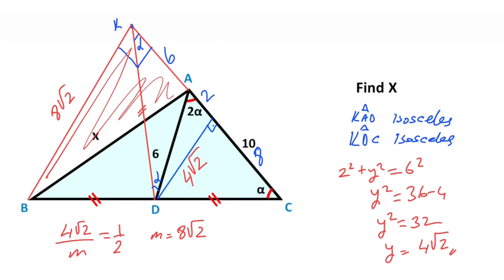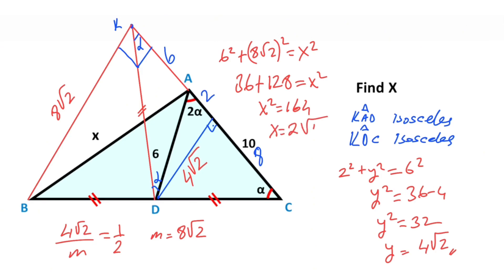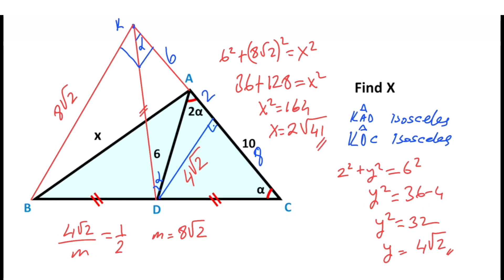Finally, for this triangle, if we apply the Pythagorean theorem we get the value of x: 6 squared plus (8√2) squared equals x squared, so 36 plus 128 equals x squared, which means x equals 2√41. That was the first method.